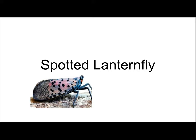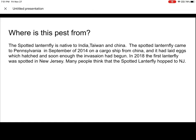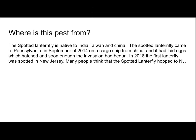So now let's talk about the spotted lanternfly, because that's our main topic. As you can see here, that's an image of a spotted lanternfly — yeah, they look very pretty. So where is this pest from? The spotted lanternfly is native to India, Taiwan, and China. The spotted lanternfly came to Pennsylvania in September of 2014 on a cargo ship from China, and it had laid eggs which hatched, and soon enough the invasion had begun.